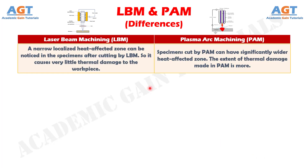Number 8: A narrow localized heat affected zone can be noticed in specimens after cutting by Laser Beam Machining, so it causes very little thermal damage to the workpiece. Whereas specimens cut by Plasma Arc Machining can have a significantly wider heat affected zone, and the extent of thermal damage made in Plasma Arc Machining is more.